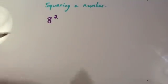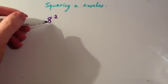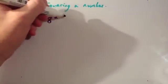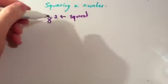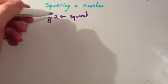We're now going to look at squaring a number. So, this says 8 squared. This little 2 stands for squared. If you ever see a superscript 2, it means you're going to square the number.